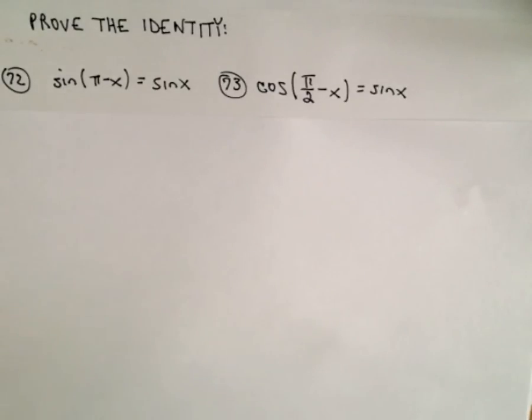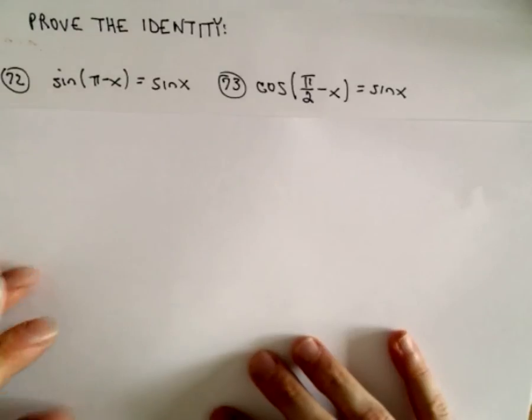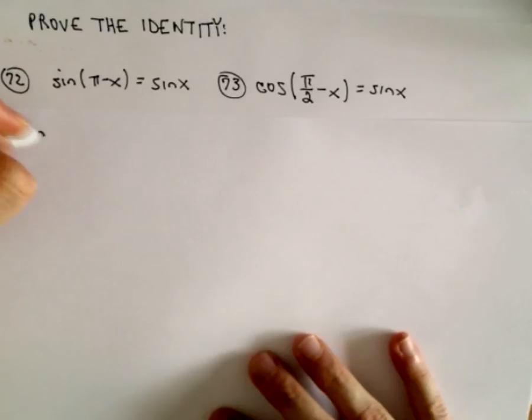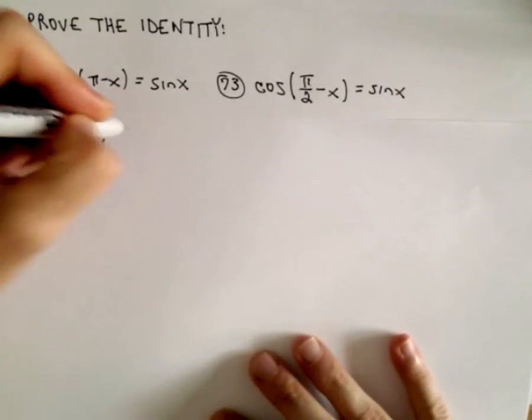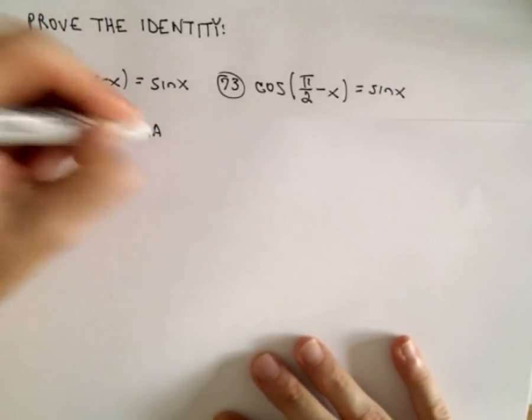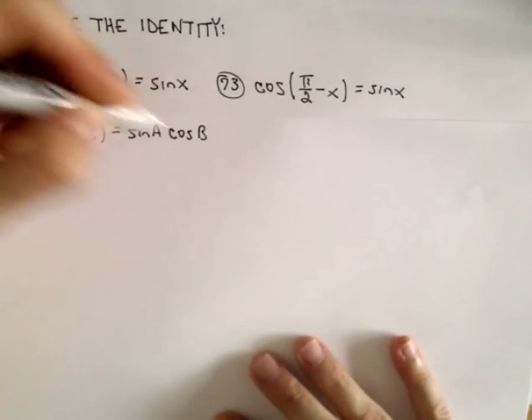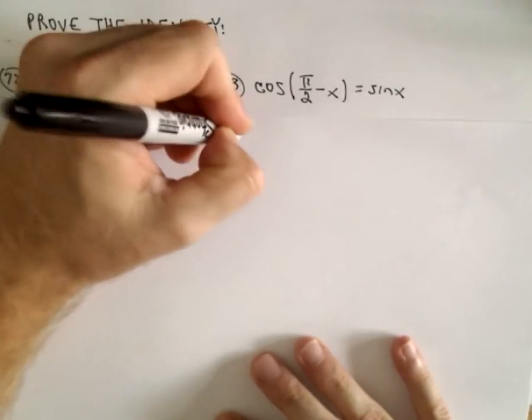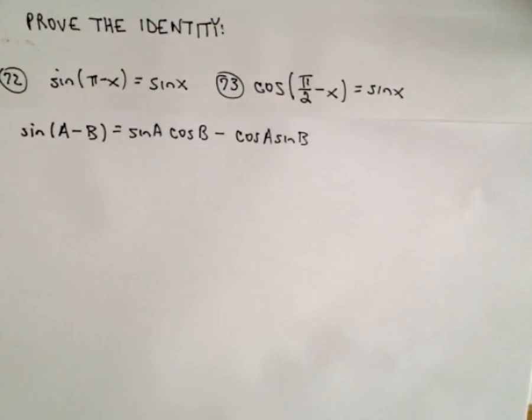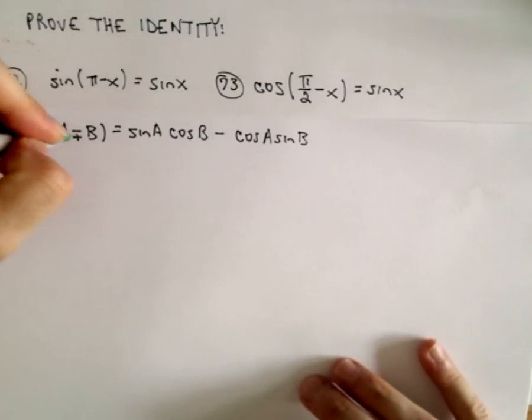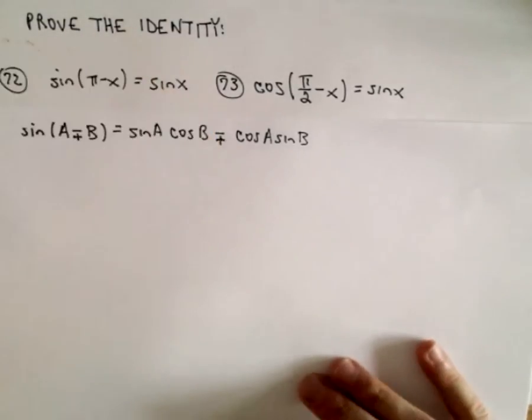Identities that you need to remember for sure. So let's start with 72 here. We've got sin(π - x) = sin x. So one identity you'll definitely want to remember is if you have sin(A - B), that gives you sin A cos B minus cos A sin B. Likewise, if instead of having a minus sign you have a plus sign, well you would just get a plus sign in there as well.